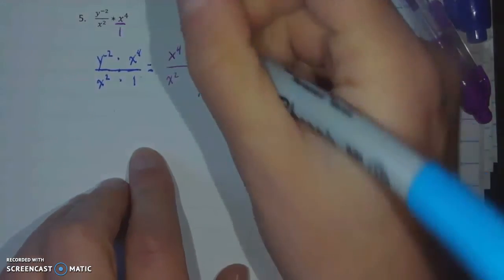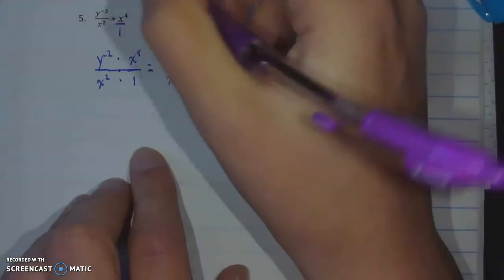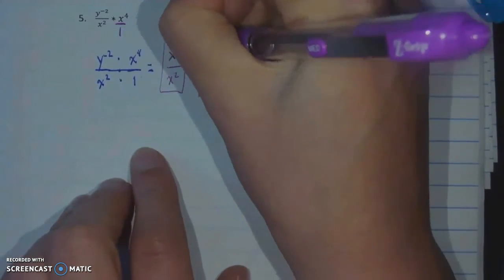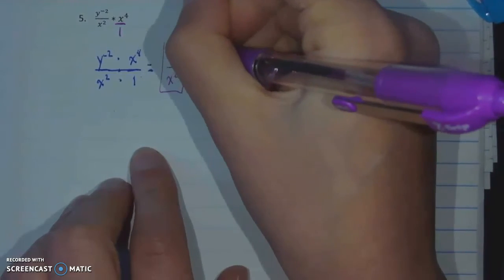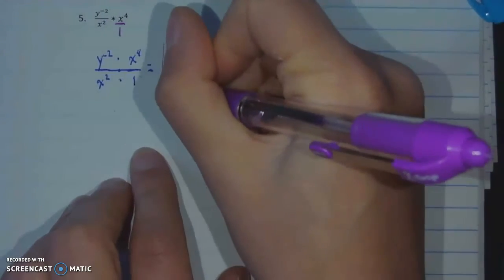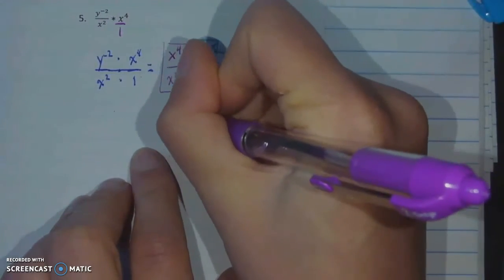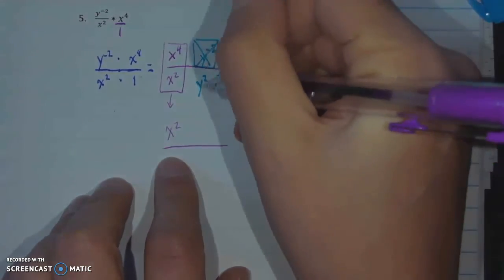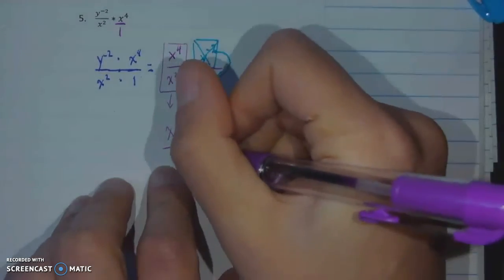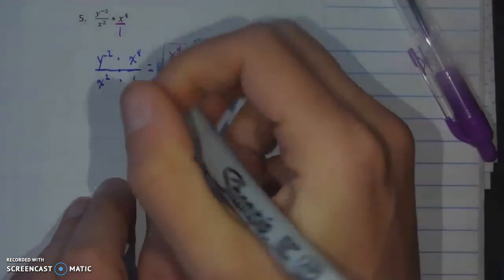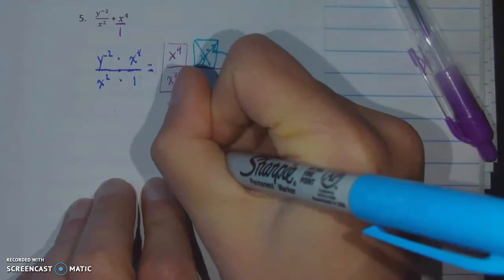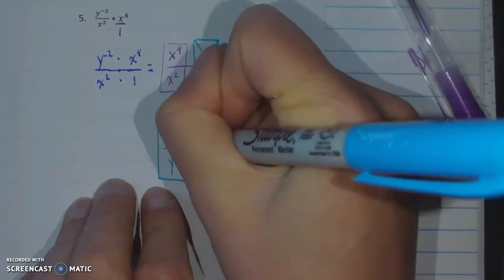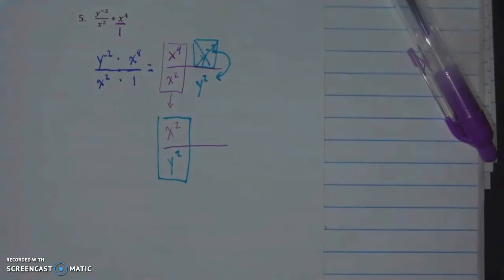Here what I end up with is for my y, x to the 4th over x squared. So that's going to be x to the 4 minus 2 or x squared. And that's in the top of the fraction because it's a positive number. And my y has no simplification. It's just stuck in the bottom. At this point I can place it under the x. Because I have nothing else to simplify. And my final answer is x squared, y squared.